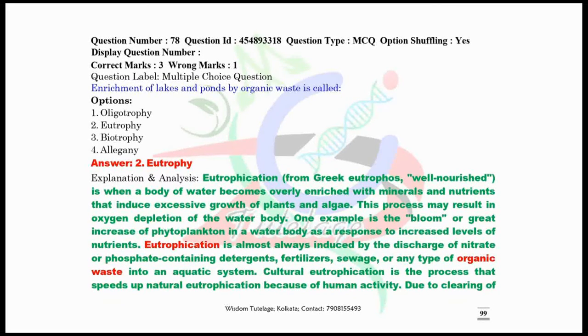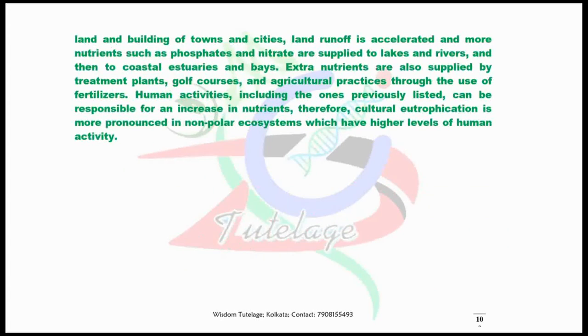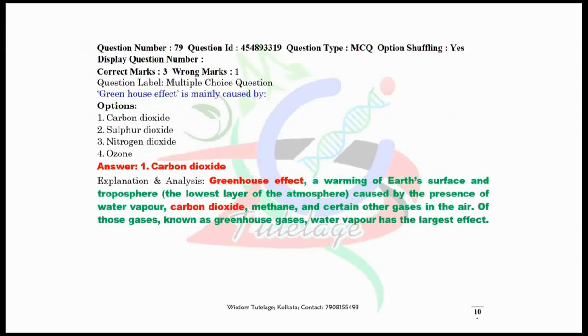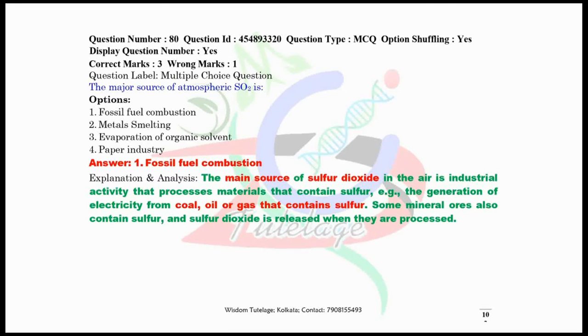Question number 79, greenhouse effect is mainly caused by carbon dioxide. There are several greenhouse gases, but in the given options the correct answer is option number one, carbon dioxide. Apart from that, methane and certain other gases are also known as greenhouse gases. Now question number 80, the major source of atmospheric sulfur dioxide is fossil fuel combustion.